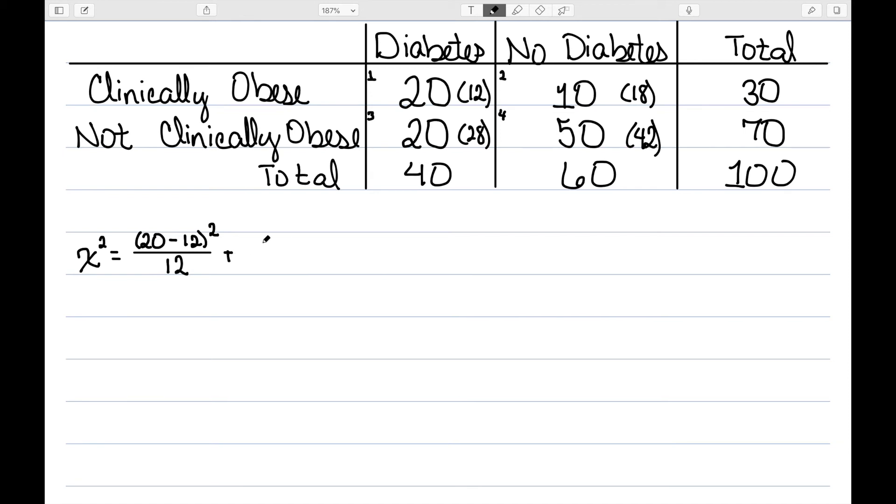For cell two, we had 10 observed, 18 expected, squared divided by the expected, 18. For cell three, 20 minus 28 squared divided by 28. And for cell four, 50 minus 42 squared over 42.